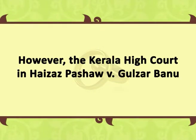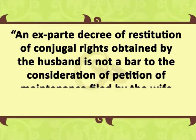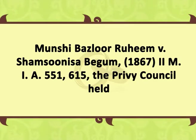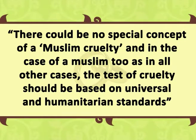However, the Kerala High Court in Haziz Basha v. Gulzar Bano held that an ex-parte decree of restitution of conjugal rights obtained by the husband is not a bar to the consideration of a petition for maintenance filed by the wife under section 125 of the Criminal Procedure Code. Cruelty is a defense against restitution. Where a husband who has treated the wife with cruelty afterwards claims restitution of conjugal rights against her while she has withdrawn from his company, the court may not oblige him. As regards the test of cruelty in the case of Munshi Bazlur Rahim v. Shamsu Nisa Begum, the Privy Council held there could be no special concept of Muslim cruelty and in the case of a Muslim too, as in all other cases, the test of cruelty should be based on universal and humanitarian standards.